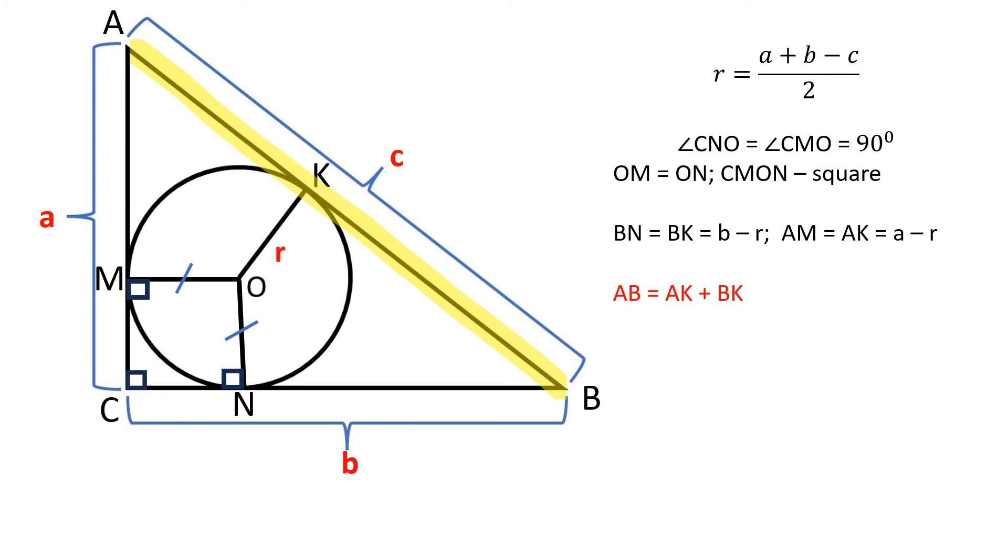AB is equal to the sum of AK and BK. Let's substitute in our variables and after solving the equation we are left with our original formula.